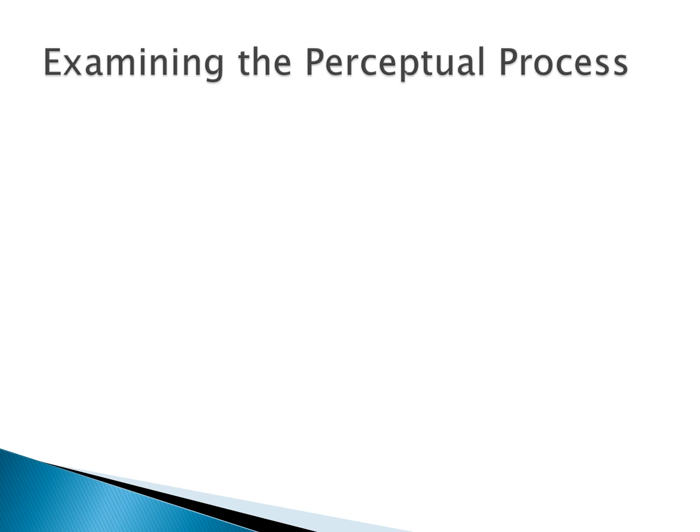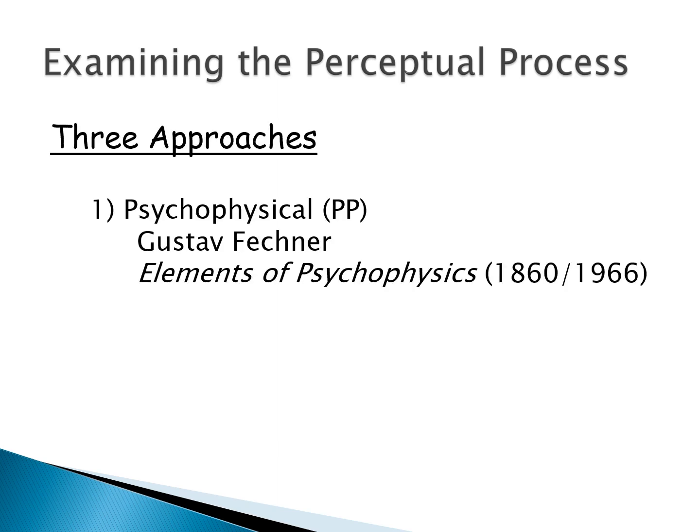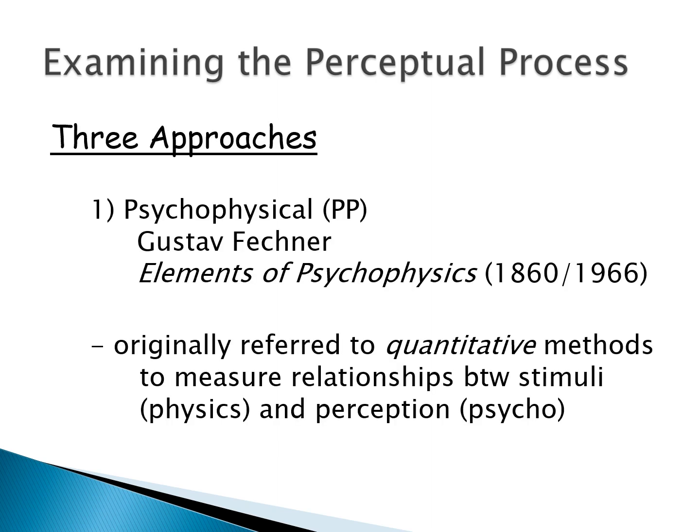We'll begin with different approaches to measuring perception. The first approach is the psychophysical approach — the 'physio' is the physical piece, and the 'psycho' is what are we experiencing: the psychology behind what's happening with the physics, or how we're experiencing those physics.